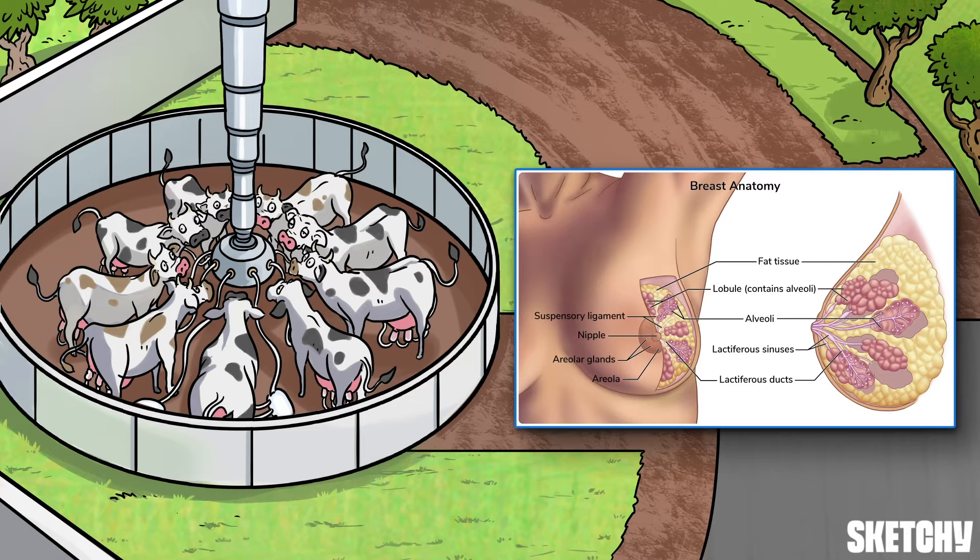Externally, each breast is composed of a nipple as well as an areola, the circular pigmented area that surrounds the nipple.